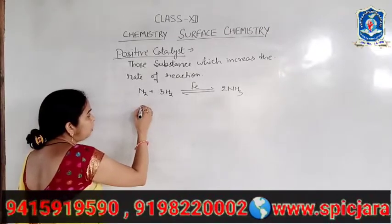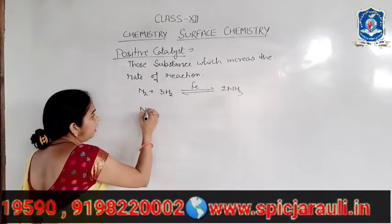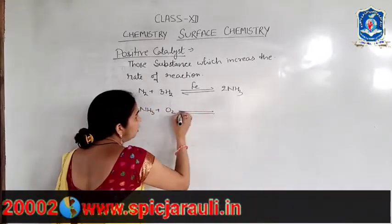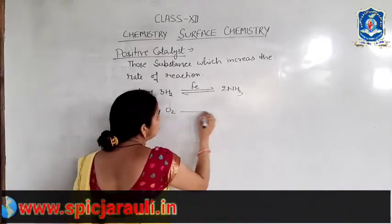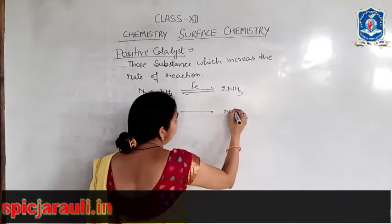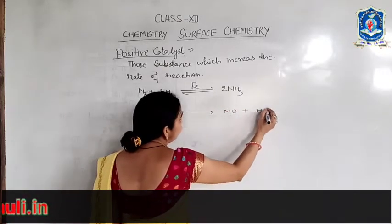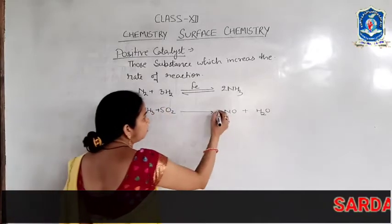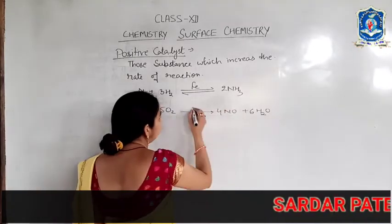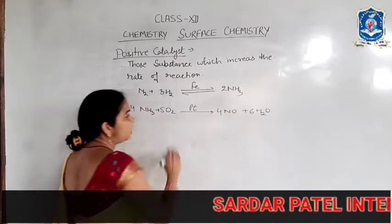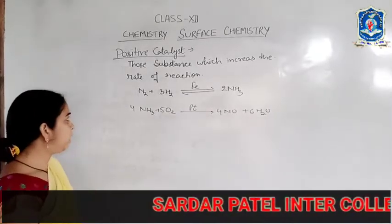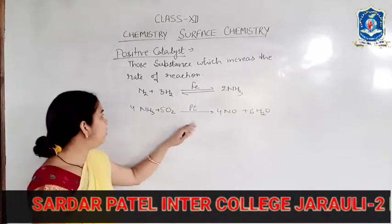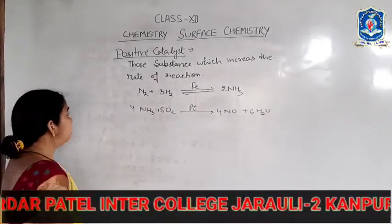Another example is ammonia oxidation. In this reaction, the products are NO plus H2O. Platinum acts as a positive catalyst in this reaction, increasing the rate of reaction.